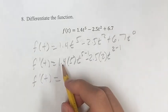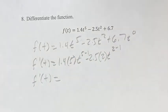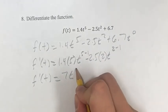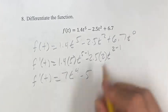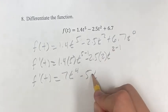f prime of t equals 1.4 times 5 is 7, t to the 5 minus 1, 5 minus 1 is 4, so t to the 4. Minus 2.5 times 2 would be minus 5, t to the 2 minus 1 is t to the 1, which is just t.